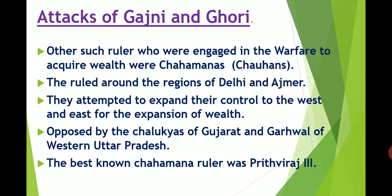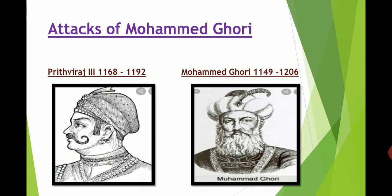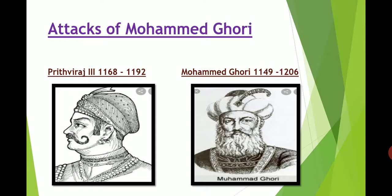Other rulers engaged in warfare to acquire wealth were the Chahamanas, also known as Chohans. They ruled around the regions of Delhi and Ajmer and attempted to expand their control to the west and east. They were opposed by the Chalukyas of Gujarat and the Ghadwals of western Uttar Pradesh. The best known Chahamana ruler was Prithviraj III.